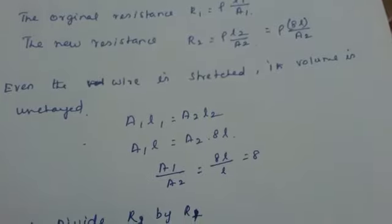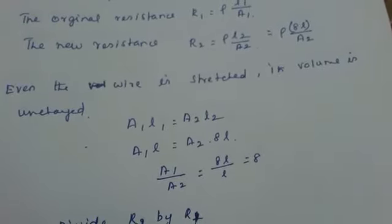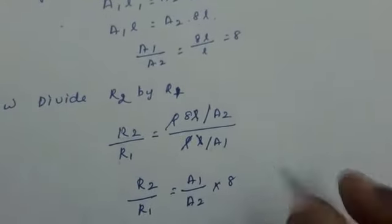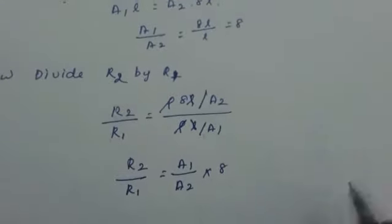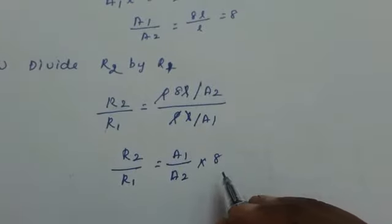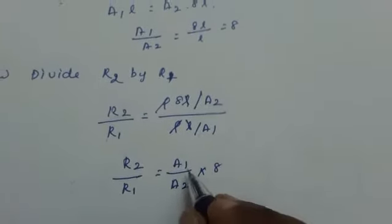So what will you get here is R2 by R1 is equal to A1 by A2 into 8.